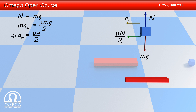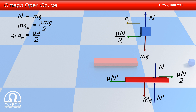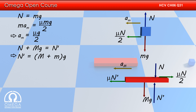Now let us draw the free body diagram of the bigger block. Gravitational force Mg will act on it in the vertically downward direction. The reaction of the normal it applied on the smaller block will push it downwards. The floor will push it upwards with normal contact force N'. Friction between the blocks, that is μmg/2, will act on it in the forward direction. Balancing forces in the vertical direction, we get N + Mg = N', or N' = (M + m)g.